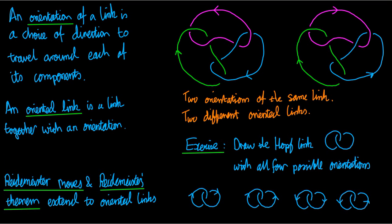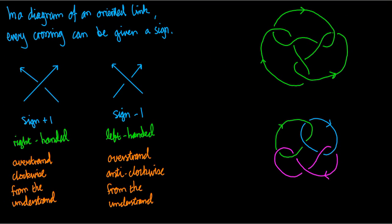Now an important subject is next: the subject of signs. In a diagram of an oriented link — here are two diagrams of oriented links — every crossing can be given a sign. For example, in the diagram on the top right there are a total of six crossings, and we are going to give each one a sign. In the bottom right there are a total of seven crossings.